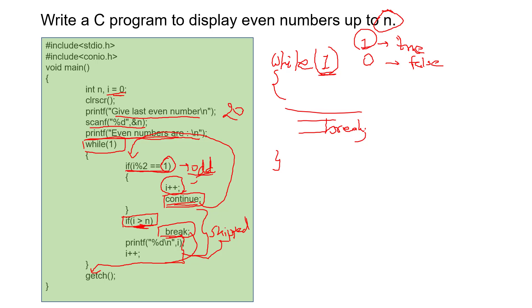If the number is not an odd number, then the number is an even number. So here we will directly print it using printf("%d\n", i). This statement will print even numbers, and then we have to increase the value of i for the next iteration. This print statement will not execute in each case — it only executes when numbers are even numbers, because if the number is odd, we are using the continue statement, which puts our control into the next iteration. After that, if the number is greater than our entered number, our loop will break.